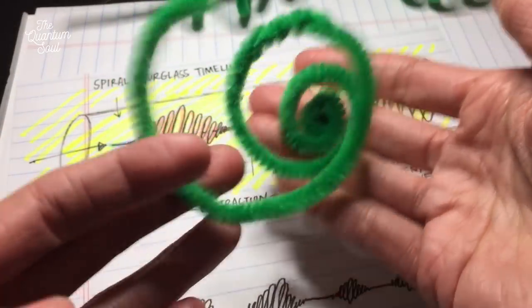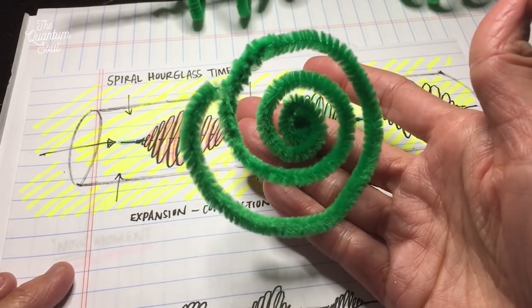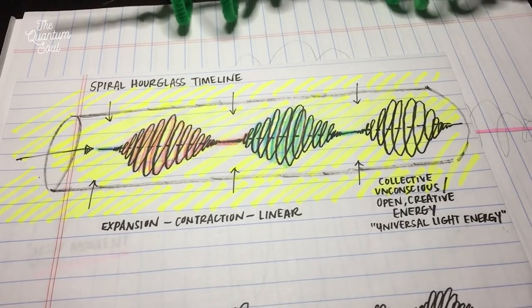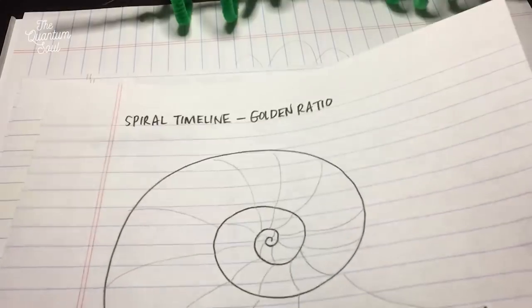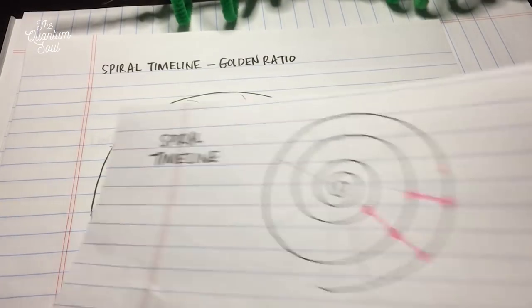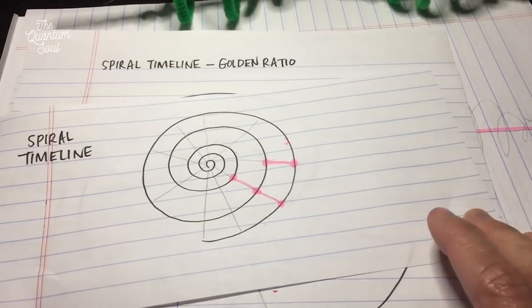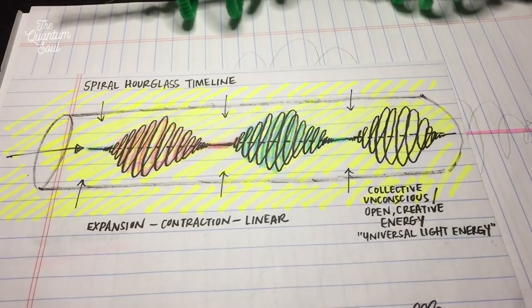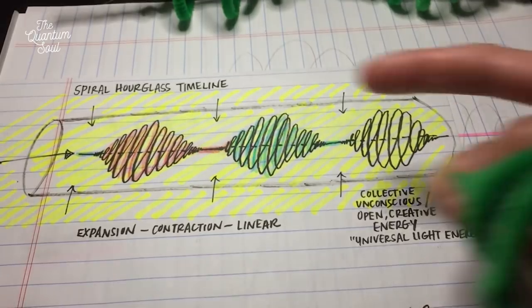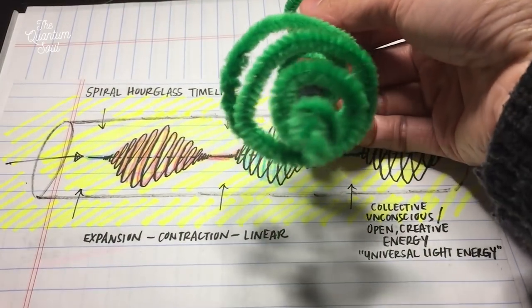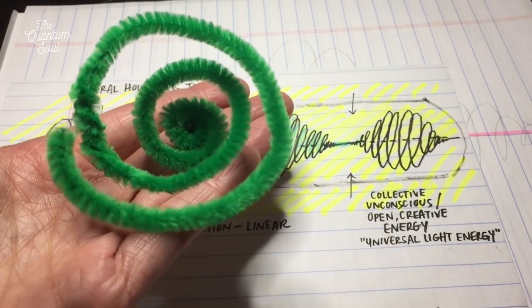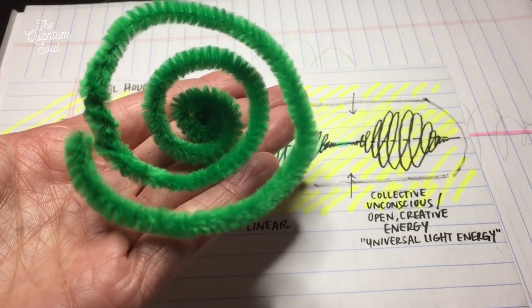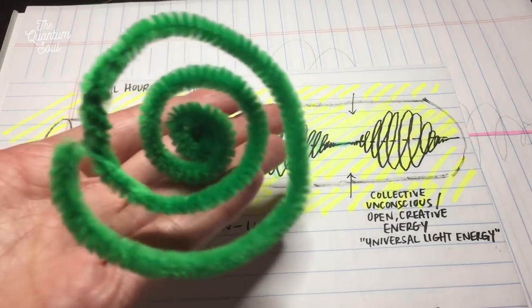What Abe showed me is that if you took this spiral hourglass timeline and everything we spoke about — the linear timeline, all the spiral timeline information — everything that we went over is basically contained within this spiral hourglass timeline. Imagine all of that here in this spiral, because in essence when you look at the spiral hourglass timeline, it looks like a spiral and you just flatten it. If you flatten it, it is basically just a circle with a spiral with a center, because that center is that now moment, that linear now moment. It's just a circle.